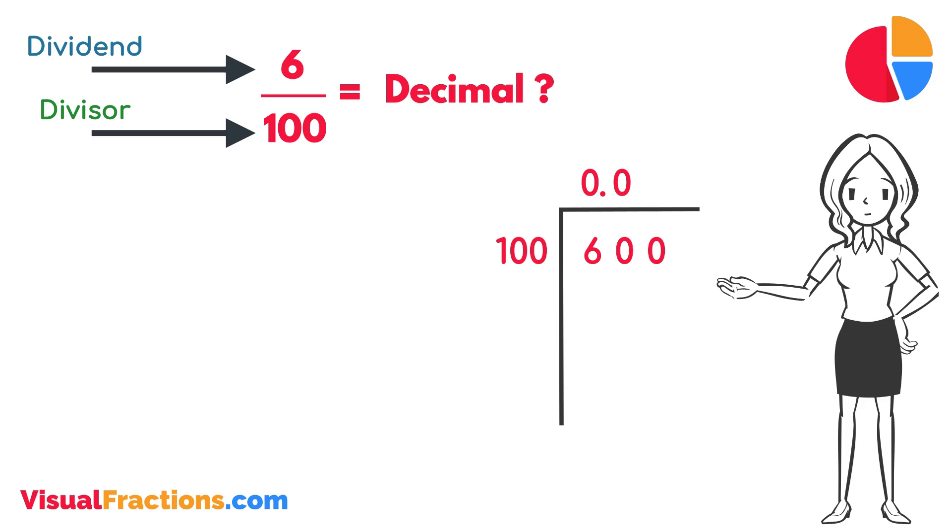How many times does 100 go into 600? Exactly 6 times. We write 6 after the decimal point in the quotient, making it 0.06.